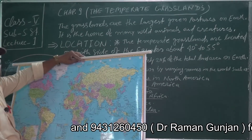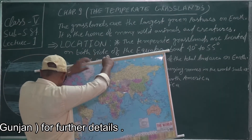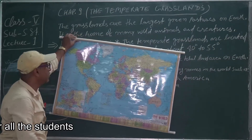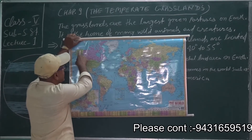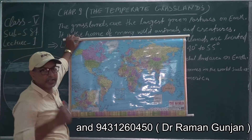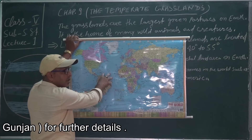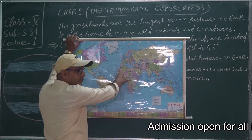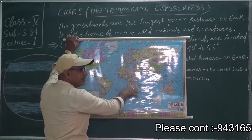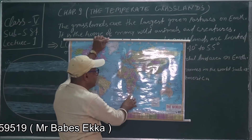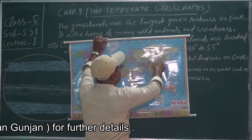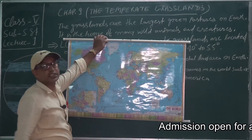Here we have a political world map. In North America — USA and Canada — this area is known as prairies and plains. In South America it is Pampas. Whole Africa has Savanna, but South Africa specifically has Veld. In Australia it is Downs, and in Asia or Eurasia it is known as Steppe.